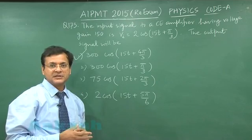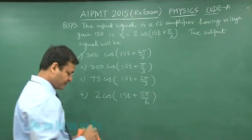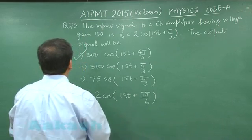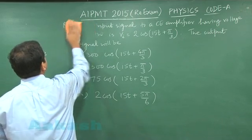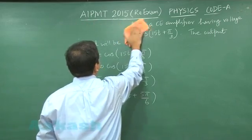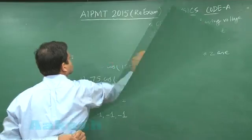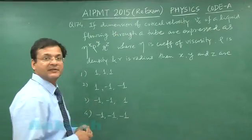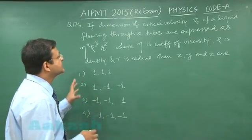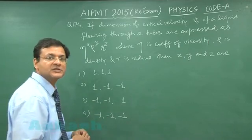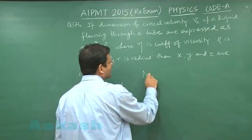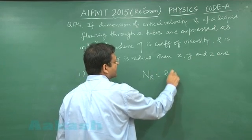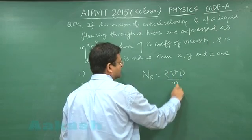Switch over to next question that is 174. Now this question 174 is based on dimensional analysis, but we will be using a direct formula, that of Reynolds number here. You know that Reynolds number, which is a dimensionless quantity, it is written as rho vd upon eta.